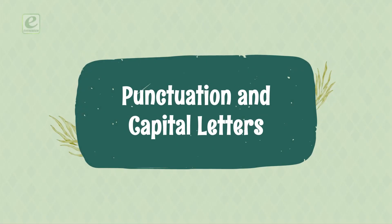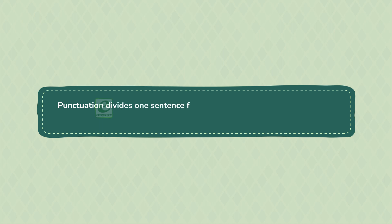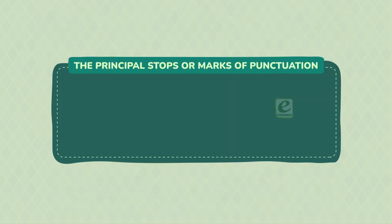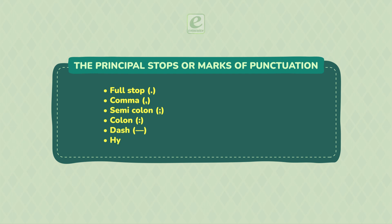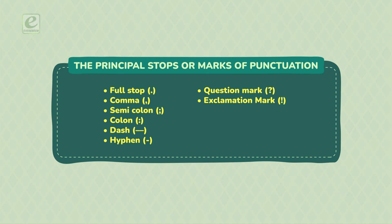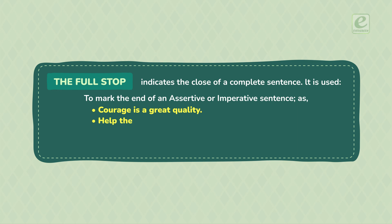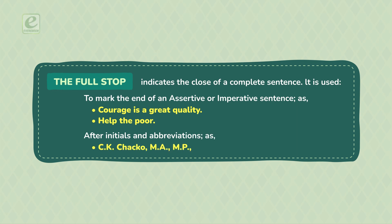Punctuation and Capital Letters. Punctuation divides one sentence from another sentence, or part of a sentence from another, by means of points, stops or marks. The principal stops or marks of punctuation are: full stop, comma, semicolon, colon, dash, hyphen, question mark, exclamation mark, apostrophe, brackets, and inverted commas. The full stop indicates the close of a complete sentence. It is used to mark the end of an assertive or imperative sentence, as: 'Courage is a great quality.' 'Help the poor.' After initials and abbreviations as C.K. Chaco, M.A., M.P., M.L.A., B.A., B.Ed.